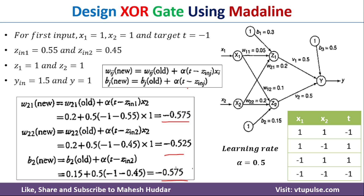Once we calculate these updated weights, we feed the next input. With the modified weights, we again calculate the output at the output neuron and compare it with the target. If it matches, no weight update is needed. If it doesn't match, we again go back and modify the weights.